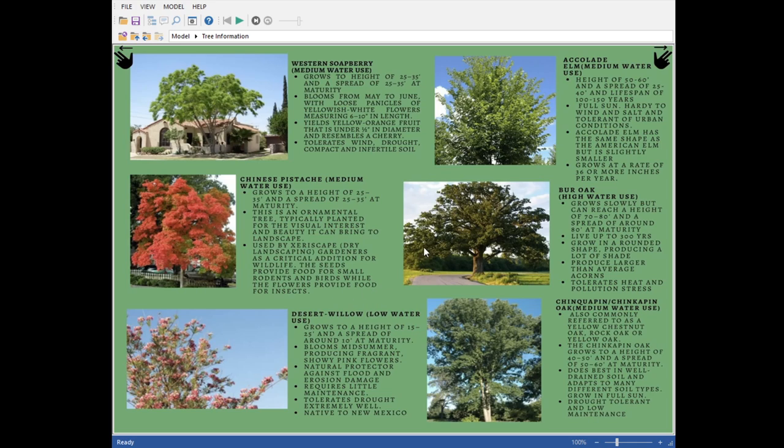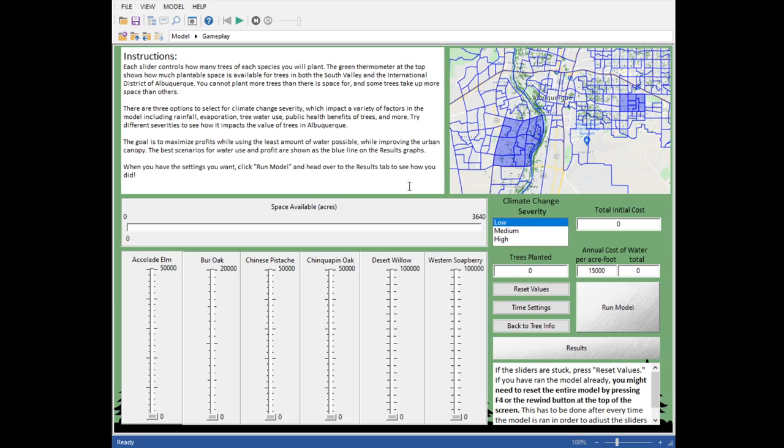Another important factor is the size of the trees. So desert willow, it's low water use, but it doesn't provide nearly as much shade as something like the bur oak. So the bur oak will have a much greater impact on things like public health and the urban heat island effect. Here, you get to the actual gameplay. So there's a few different areas which we'll go through. First is the instructions, which just gives you a rundown on this page.